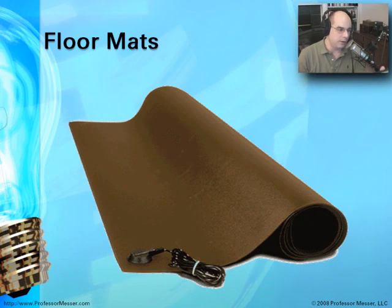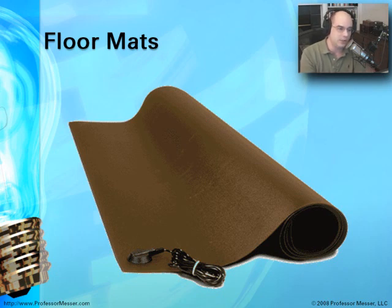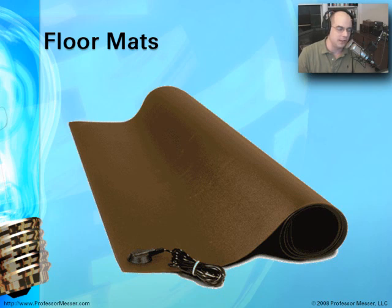If you're in an environment where you're walking around quite a bit — for example, computer operators installing tapes, moving to different printers, or looking at different screens — you can't really have a wrist strap on at that time. So this extends protection quite a bit because this is an entire floor mat that has an electrostatic discharging ground at the corner of it. That way, you can walk back and forth across the mat and feel relatively safe that you're preventing electrostatic discharge if you happen to touch a piece of electronics on that floor mat.